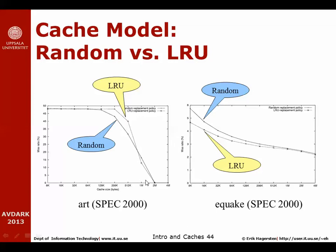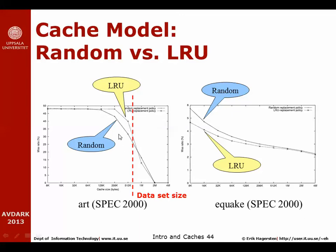Why is that? The art application has a very popular data structure which is like a vector. When you have caches that are slightly smaller than the size of that vector, it becomes suboptimal to implement LRU. You go through this vector from beginning to end over and over in this simulation, and if the cache is slightly smaller than the vector, LRU will make sure that all this data is thrown out over and over again. Randomly throwing something out actually produces much better performance when the cache is too small to hold the entire vector.